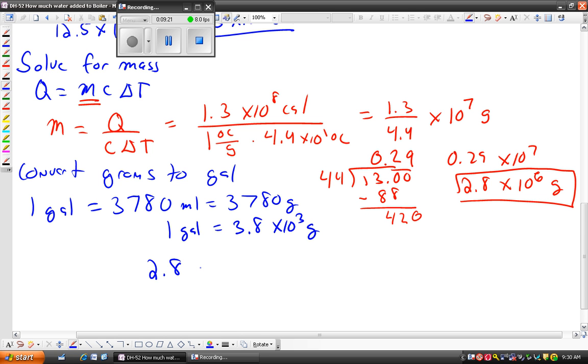So 2.8 times 10 to the 6 grams times—remember put this over 1, we want to get rid of grams—so 3.8 times 10 to the 3 grams is 1 gallon. So now what we have to do is this is going to be the same as 2.8 divided by 3.8. And then when you take the powers, 10 to the 6 divided by 10 to the 3, subtract the powers, that gives you times 10 to the 3.